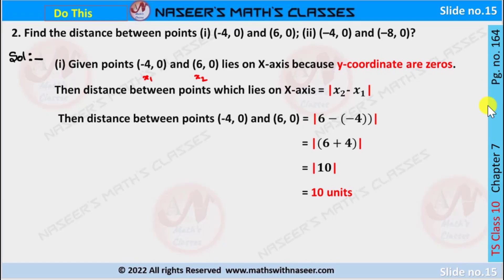Do this, page number 164, chapter 7, coordinate geometry. Second problem: Find the distance between points (-4, 0) and (6, 0), and second bit is (-4, 0) and (-8, 0).